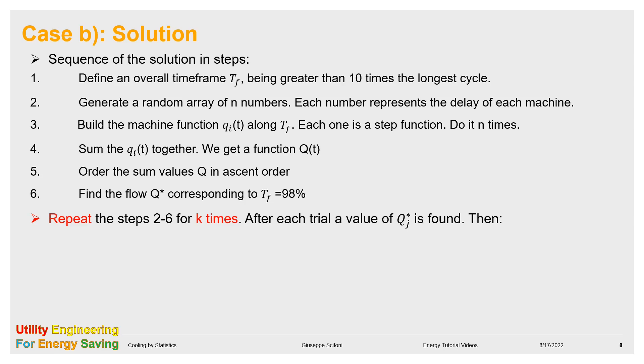When capital Q star is found, our job is still not done, because we are operating in a statistical way, and we cannot rely on one combination of cycles only. The Monte Carlo method says we need to run many trials. We repeat the steps from 2 to 6 K times, as many random arrays are generated. After each trial, a value of capital Q star is found, and eventually we calculate the average of the Q star J when J changes from 1 to K, the standard deviation, and the sum of above. The value to take for the flow needed for our equipment sizing is given at 0.9.